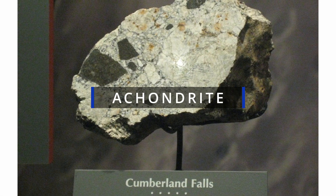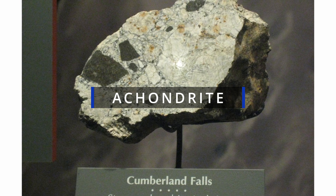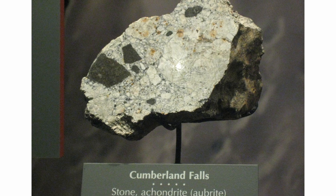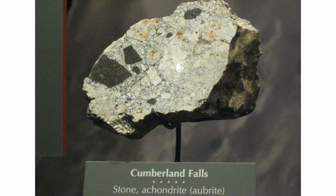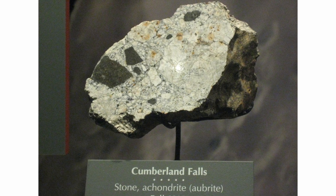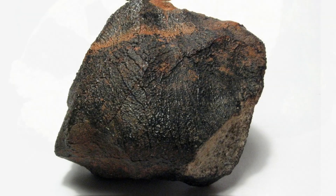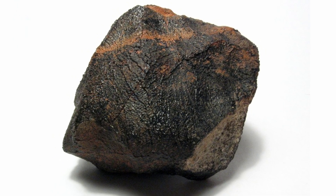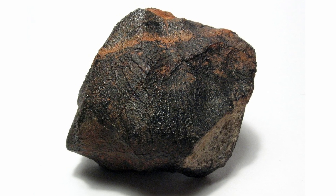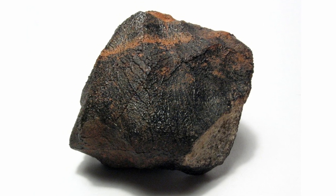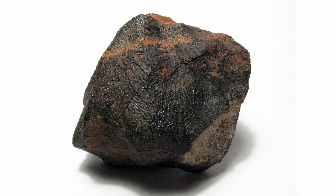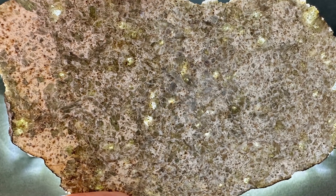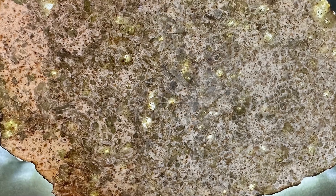Achondrites include meteorites from asteroids, Mars, and the Moon. They are igneous, meaning at some point they were melted into magma. When magma cools and crystallizes, it creates a concentric layered structure — a process known as igneous differentiation. The rocky planets Mercury, Venus, Earth, and Mars were formed in this way, giving them planetary crusts, mantles, and cores. Achondrites can tell us a lot about the internal structure and formation of the planets, including our own.